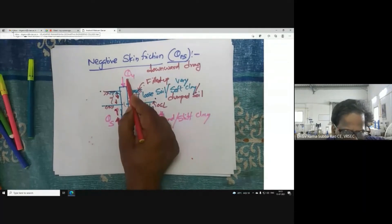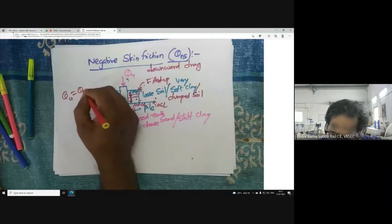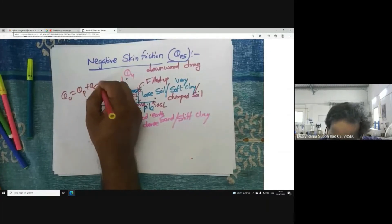Because of this negative skin friction, your load carrying capacity will be reduced. So you have to compute like this: QU = QP + QS - QNS.